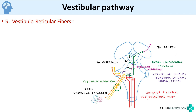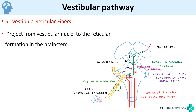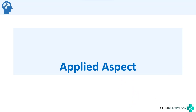The final pathway is the vestibular reticular fibers, which project from the vestibular nuclei to the reticular formation of the brainstem. So when answering a question on the vestibular pathway, you should write about the vestibular ganglion, the first-order neuron, and the tracts formed by the second-order neurons: the vestibulo-cerebellar tract, the vestibulospinal tract, the medial longitudinal fasciculus, the vestibular thalamocortical tract, and the vestibular reticular fibers.